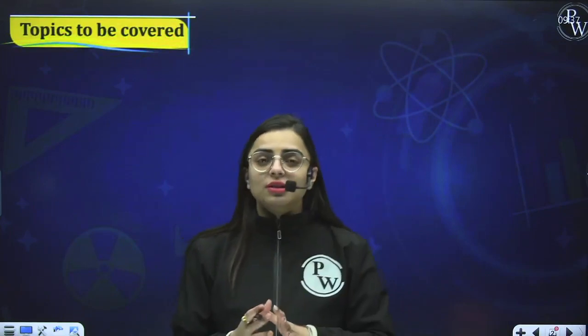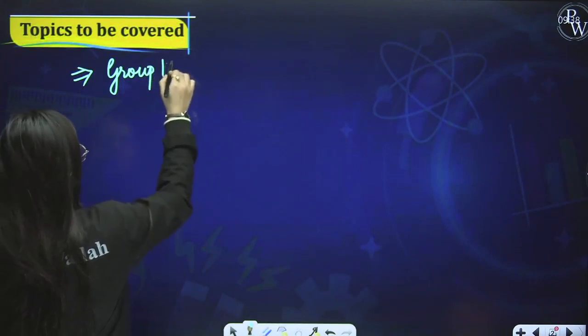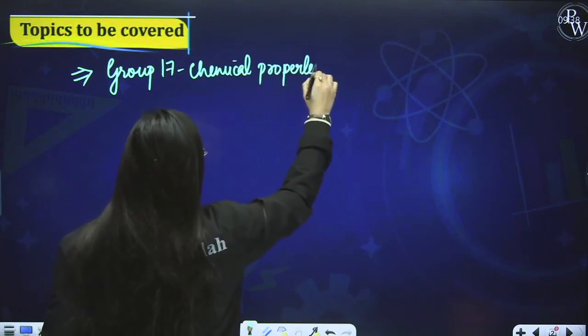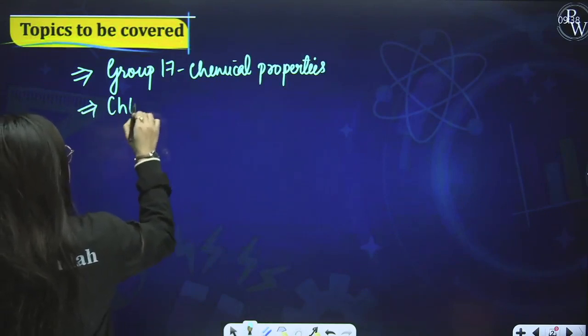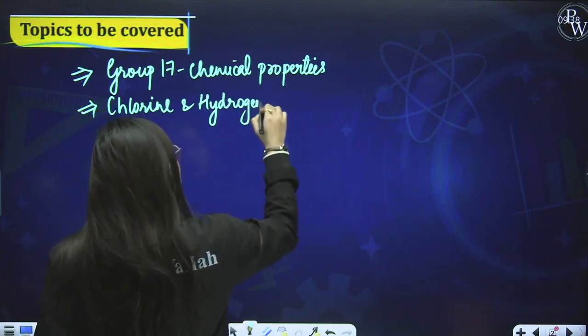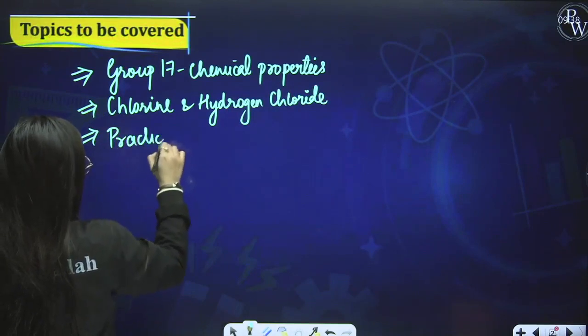First of all we will see what topics we are going to cover. As you have seen in the previous lecture — Lecture No. 4 — we discussed Group No. 16, Group No. 18, and also the physical properties of Group No. 17. Today we will cover the leftover portion of Group No. 17, and also practice some questions. The very first topic is Group No. 17 chemical properties, then Chlorine and Hydrogen Chloride, and finally a practice session.